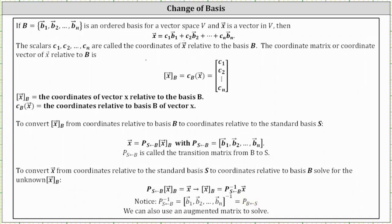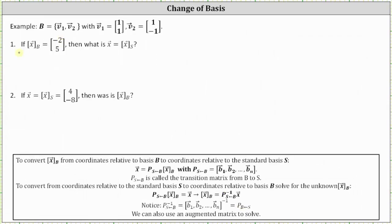Let's take a look at two examples. If the coordinates of vector x relative to base B are (negative 2, 5), what are the coordinates of vector x relative to the standard basis vectors? We can do this two ways. Using the definition, the coordinates relative to the standard basis equal the first coordinate negative 2 times the first basis vector (1, 1), plus the second coordinate 5 times the second basis vector (1, negative 1). Simplifying, we get negative 2 times 1 plus 5 times 1, which is 3, and negative 2 times 1 plus 5 times negative 1, which is negative 7.